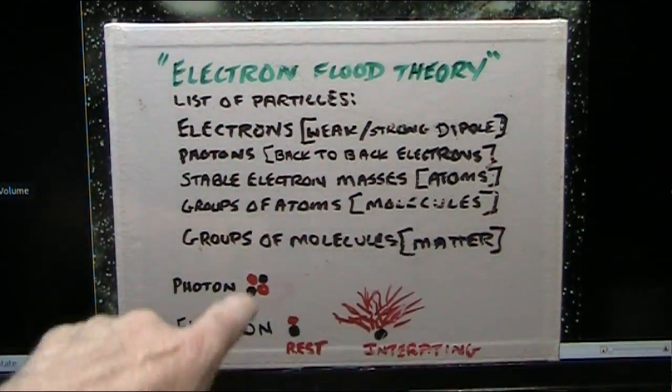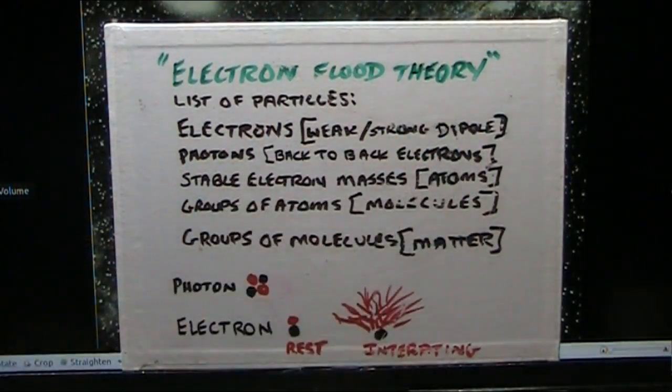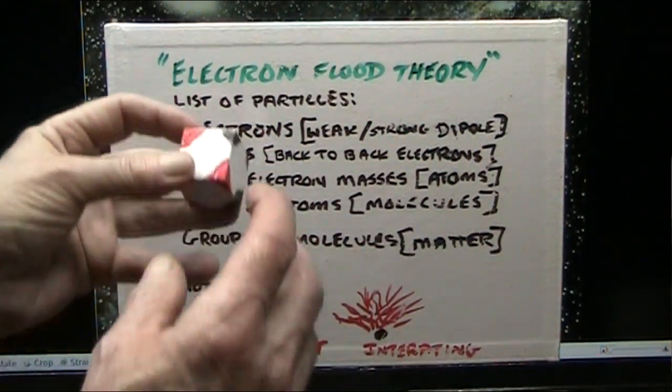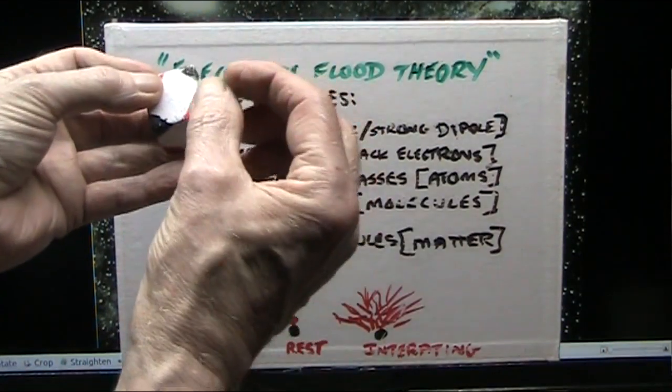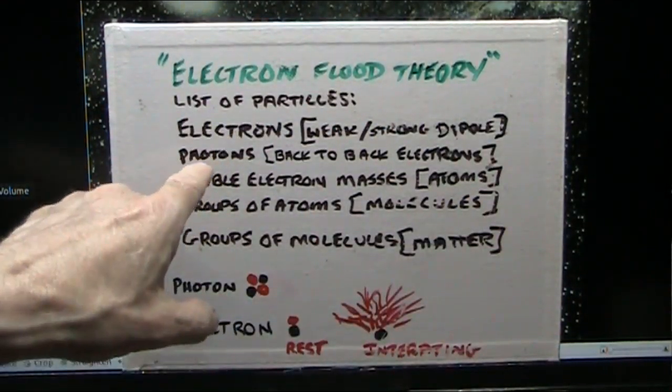Now, the list of particles in electron flood theory is electrons. Case closed. Now, electrons are what? They're weak and strong dipoles. It's a black and a white and one of them has explosiveness and one of them has nothing. I think I've already shown all this.